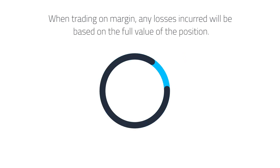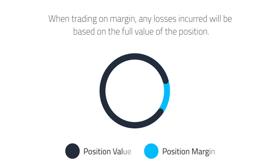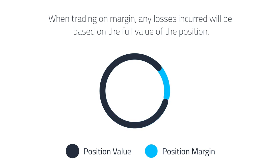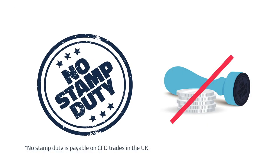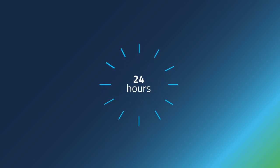Another advantage with CFDs is that you don't need much capital to get started, as you don't have to outlay the full value of your position, just a small percentage. This is called trading on margin. Since you don't own the underlying asset, there is no stamp duty to pay. With CFDs, many products are available even if the underlying market is closed, allowing you to trade 24 hours a day, 5 days a week.